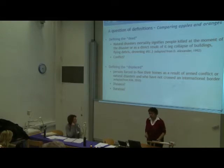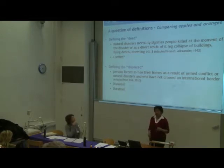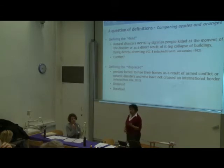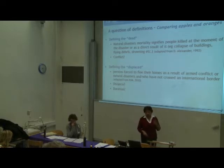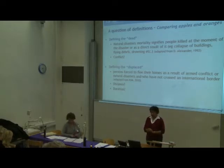We have two more questions of definitions — comparing apples and oranges. Deaths in natural disasters is a real problem, as we have seen over the 15 years we have run the HEMDAT database. There is a definition: natural disaster mortality signifies people killed at the moment of the disaster as a direct result of it — collapse of buildings, landslides, debris, drowning, and so on.